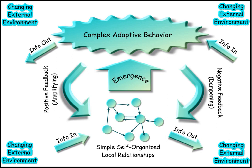Systems science is an interdisciplinary field that studies the nature of systems—from simple to complex—in nature, society, cognition, engineering, technology and science itself. To systems scientists, the world can be understood as a system of systems.